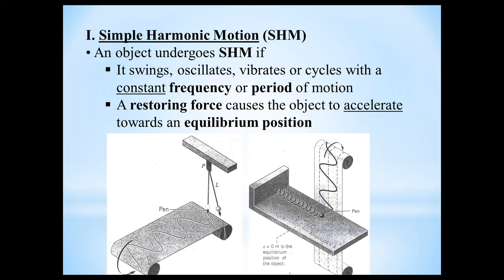We also have a mass-spring system. For this one, we have a small object — a mass attached to the end of a spring. In the state shown, we have the spring in its unstretched position. If we pull it a little bit over to the side and let go, the mass and spring oscillate back and forth. As long as there's not any friction between the surface and the mass, the frequency and the period would be constant.